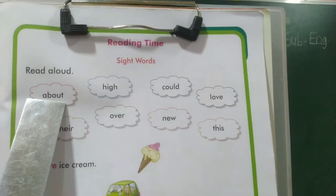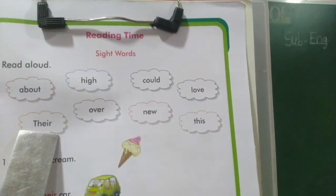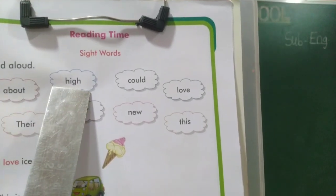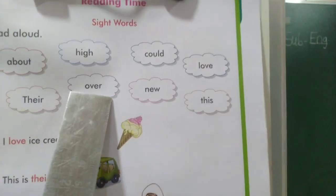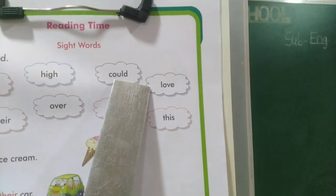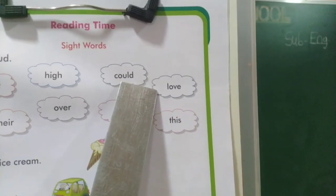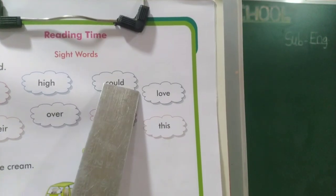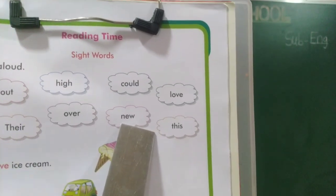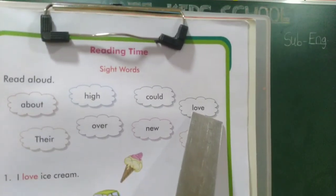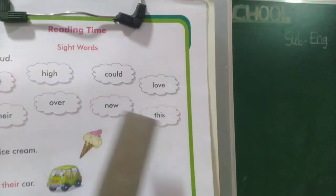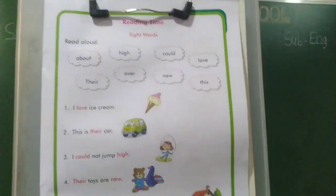A-B-O-U-T: about. T-H-E-I-R: their. H-I-G-H: high. O-V-E-R: over. C-O-U-L-D: could. N-E-W: new. L-O-V-E: love. T-H-I-S: these. Other sentences, read aloud.